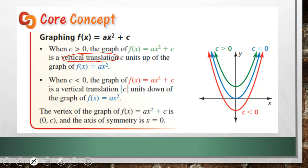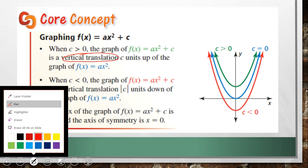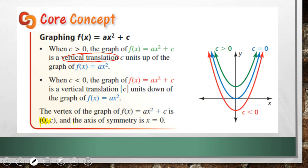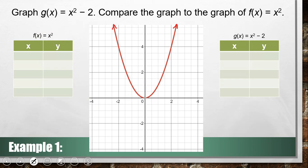The vertex of the graph f(x) = ax² + c is (0, c). And the axis of symmetry is going to be x = 0 because it's going through that vertex, that x-value of the vertex. So c is just a vertical translation. It's going to be moving our graphs up and down.